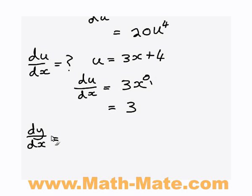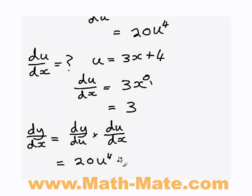We rewrite it out: dy/dx equals dy/du times du/dx. But now we know what both of these terms are. So instead of dy/du we can write 20u to the power 4, and instead of du/dx we can just write 3.